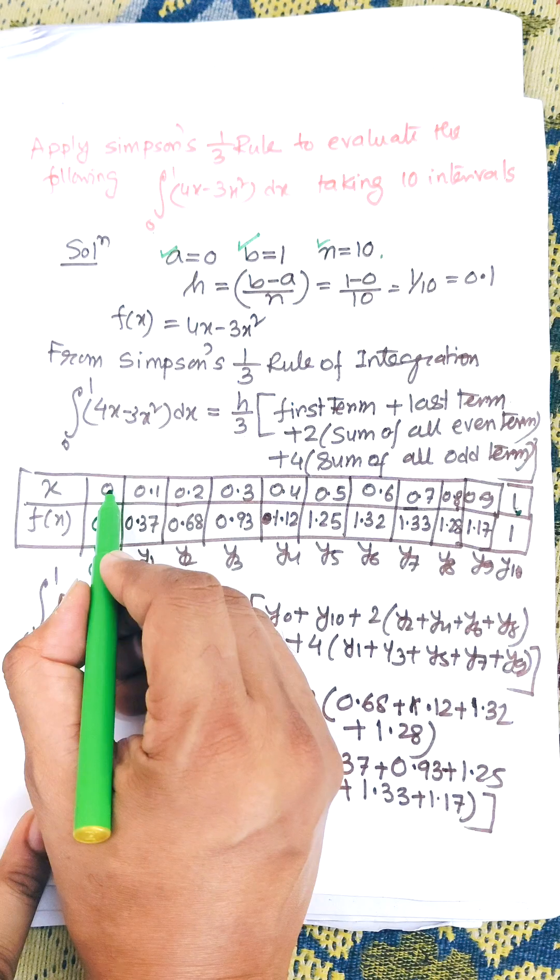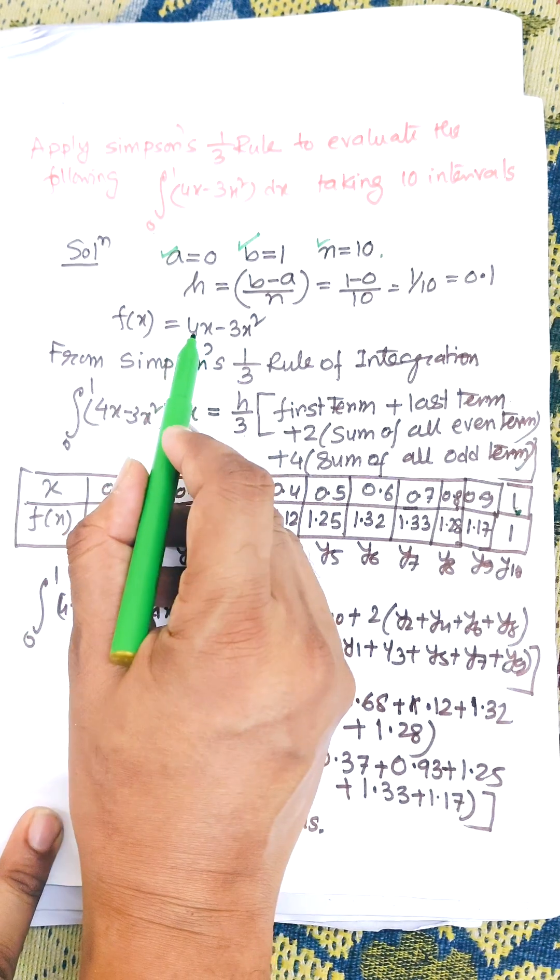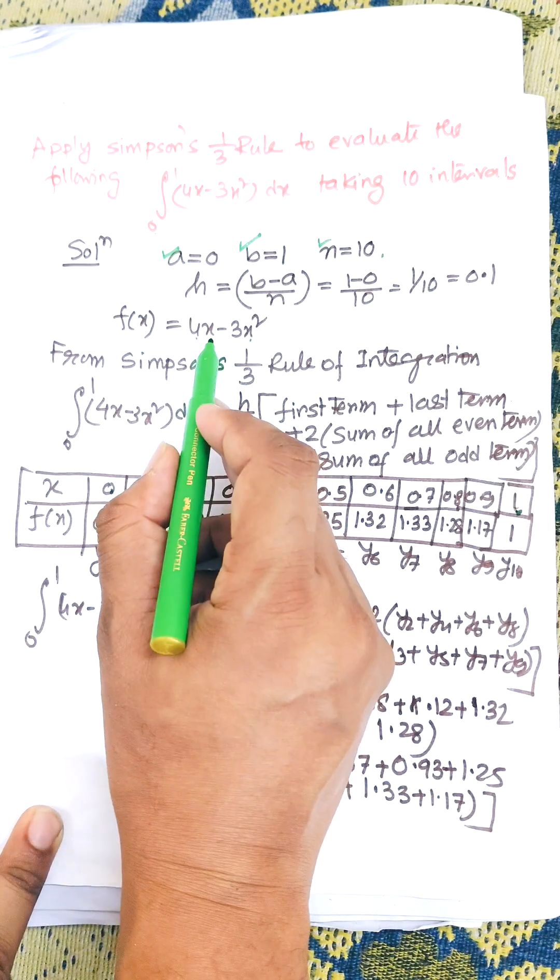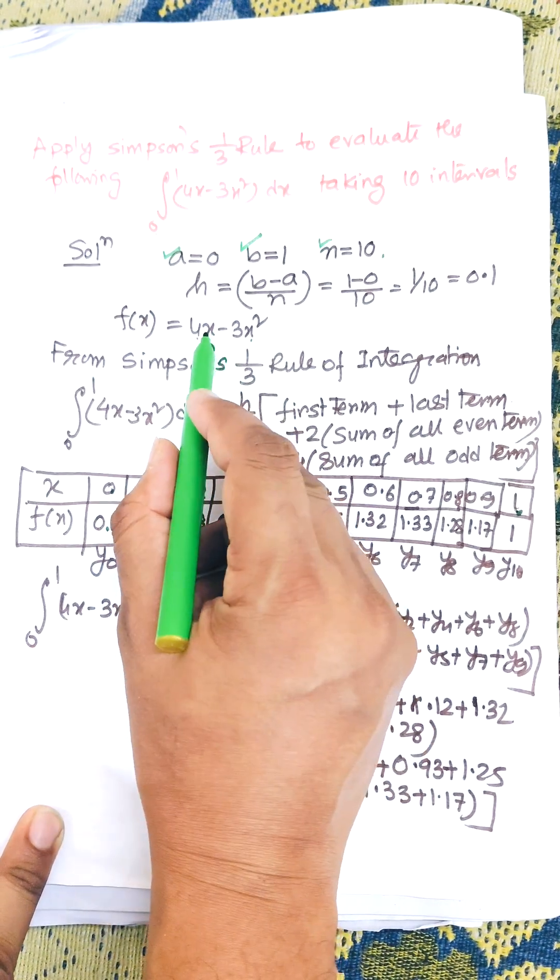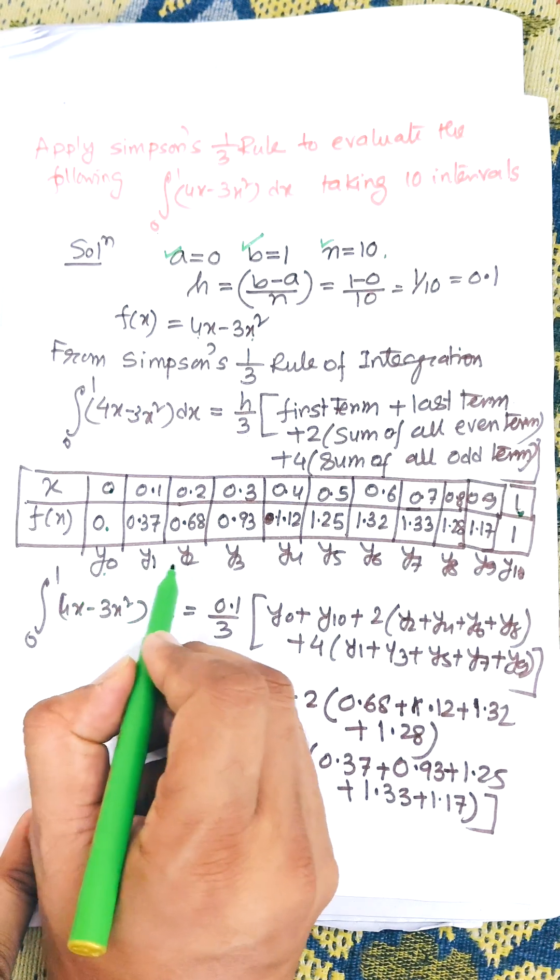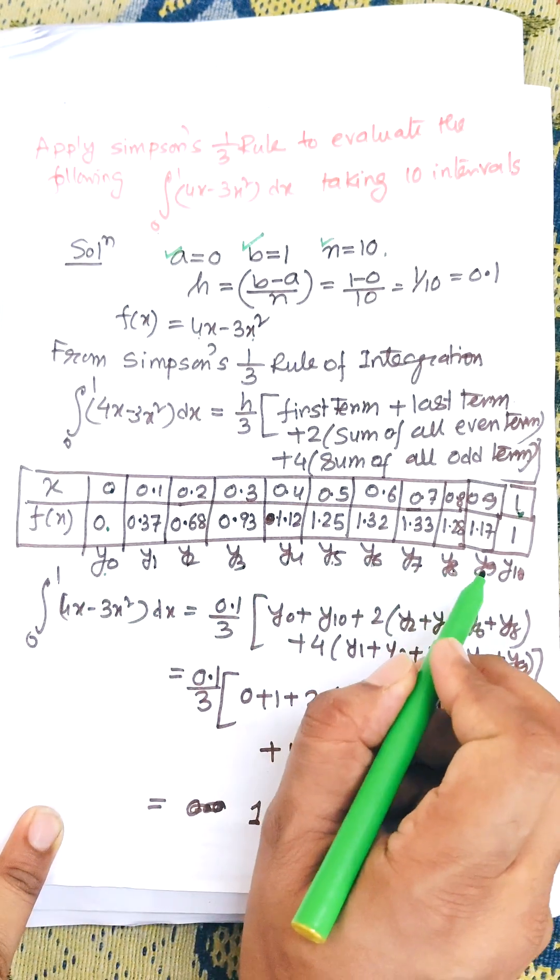Now when x equals 0 we need to calculate f(x) equals 4x minus 3x squared. Putting the value of 0 we will get 0. Putting the value of 0.1 in x we get 0.37, then 0.2, 0.3, and so on. Finally we get y0, y1, y2, y3, y4, y5, y6, y7, y8, y9, y10.